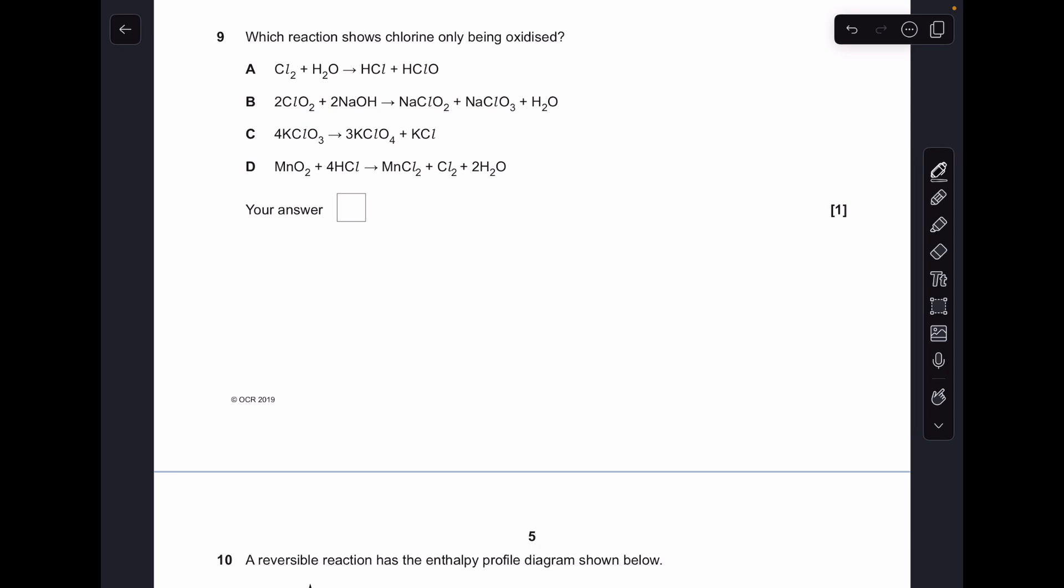Number nine, we need to look at the oxidation numbers for all the chlorine species in those reactions. So I'll just do that now. So we're looking at A, chlorine's gone from zero to minus one and plus one, so that's disproportionation, so it's been oxidized and reduced, so it's not A. Same thing's happening in B and C actually, so they're all wrong, so it's got to be D. And you can see that it is because the Cl has gone from minus one up to zero in chlorine.